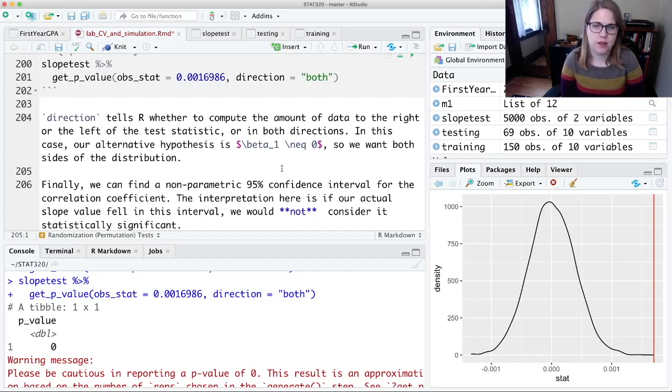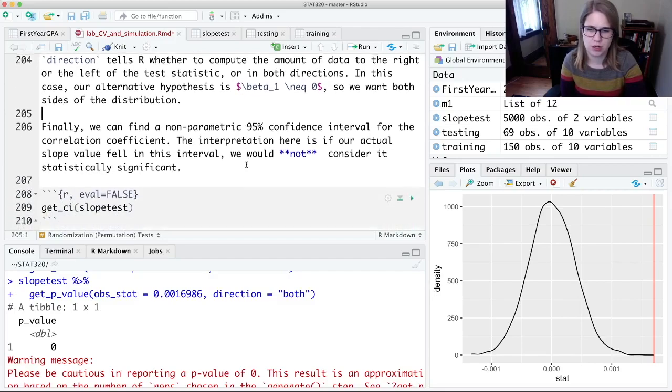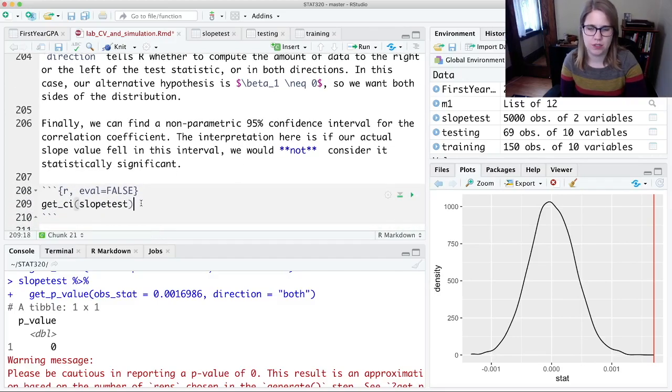Okay, so I have said that randomization is better for hypothesis testing, but you can actually also find a confidence interval for this randomization distribution. And this is kind of interesting because if our actual slope fell in the interval from our randomization distribution, we would not consider it statistically significant.